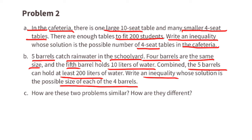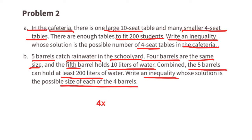B. Five barrels catch rainwater in the schoolyard. Four barrels are the same size and the fifth barrel holds 10 liters of water. Combined, the five barrels can hold at least 200 liters of water. Write an inequality whose solution is the possible size of each of the four barrels. We have four barrels that hold an unknown amount of water, and a fifth barrel that holds 10 liters. Those two amounts combined hold at least 200 liters, so the inequality is 4x plus 10 is greater than or equal to 200.